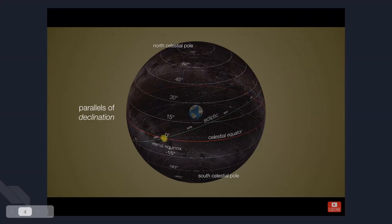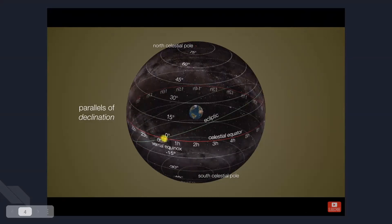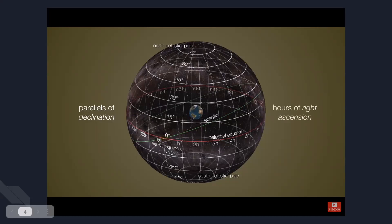Since the Earth rotates on its axis once every 24 hours, this gives us a 24 hour clock face that we can write onto the celestial equator. So when we draw parallel lines to this clock face, we then get hours of right ascension.